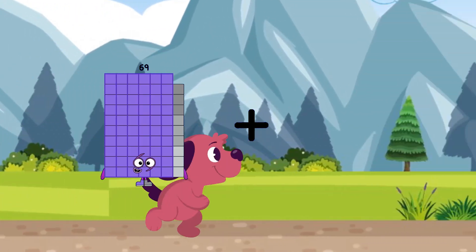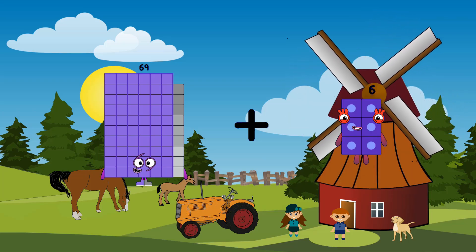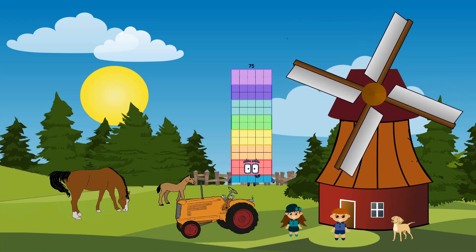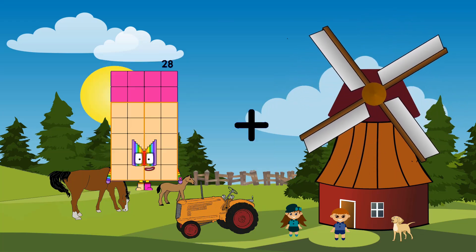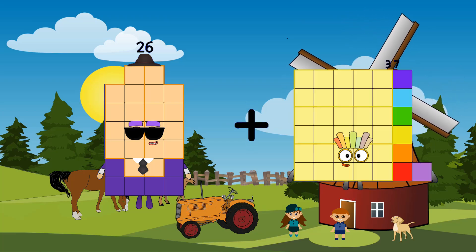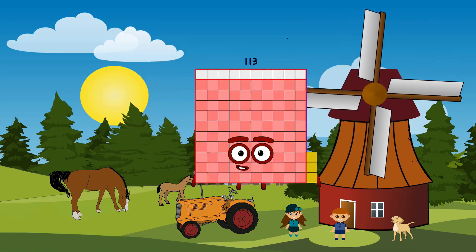69 plus 6 equals 75. 26 plus 87 equals 113.